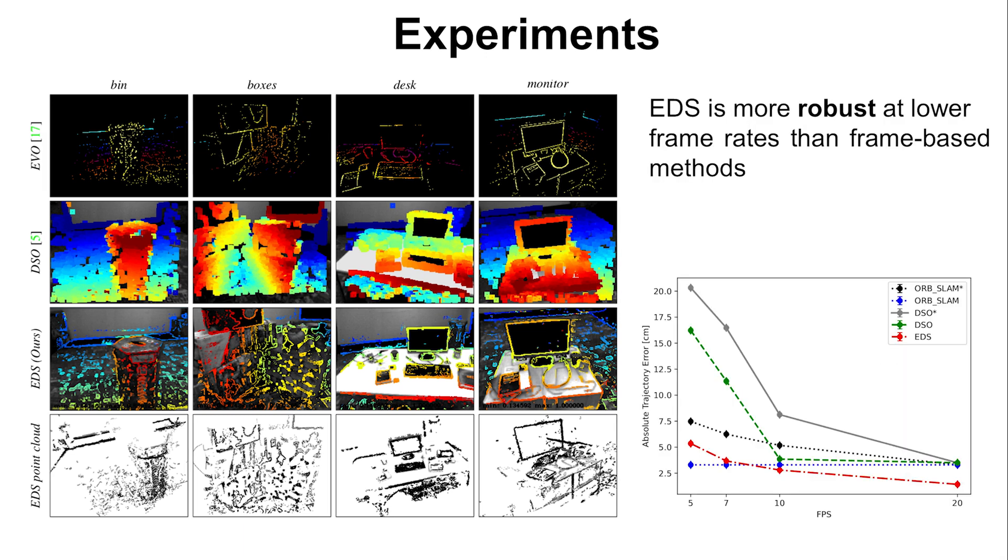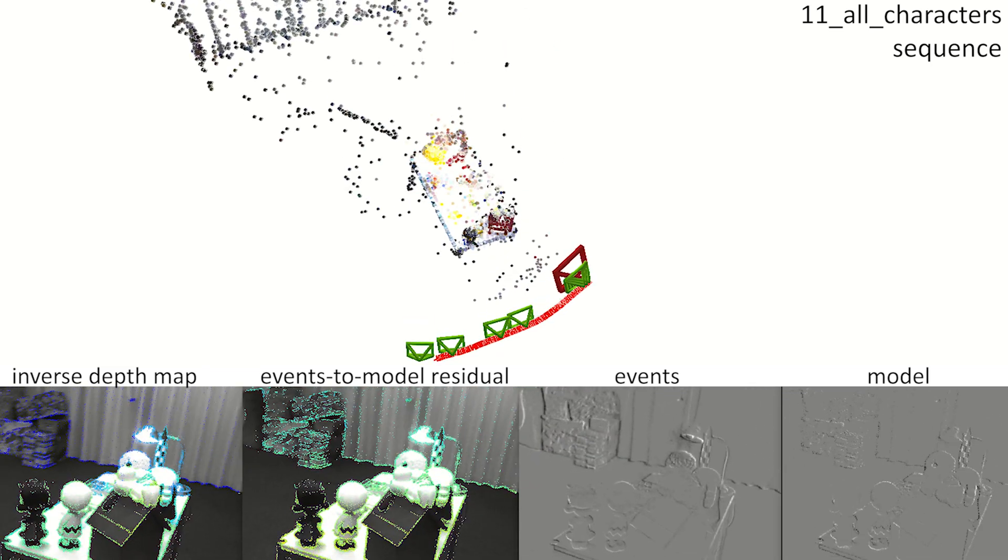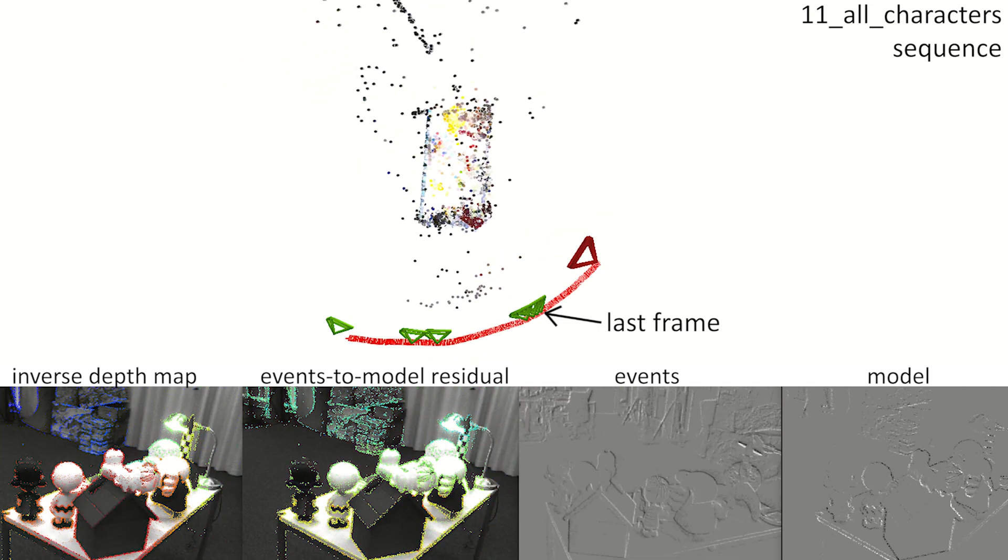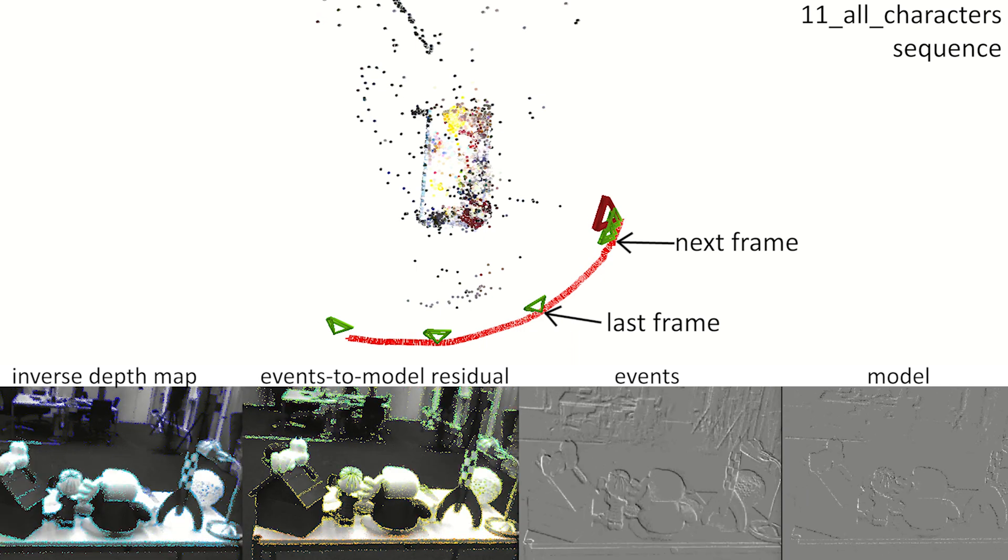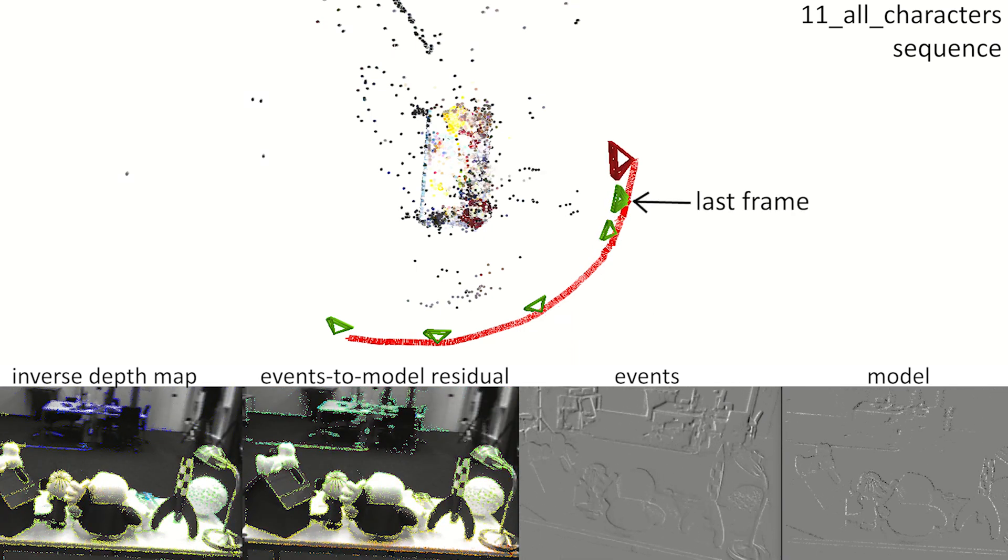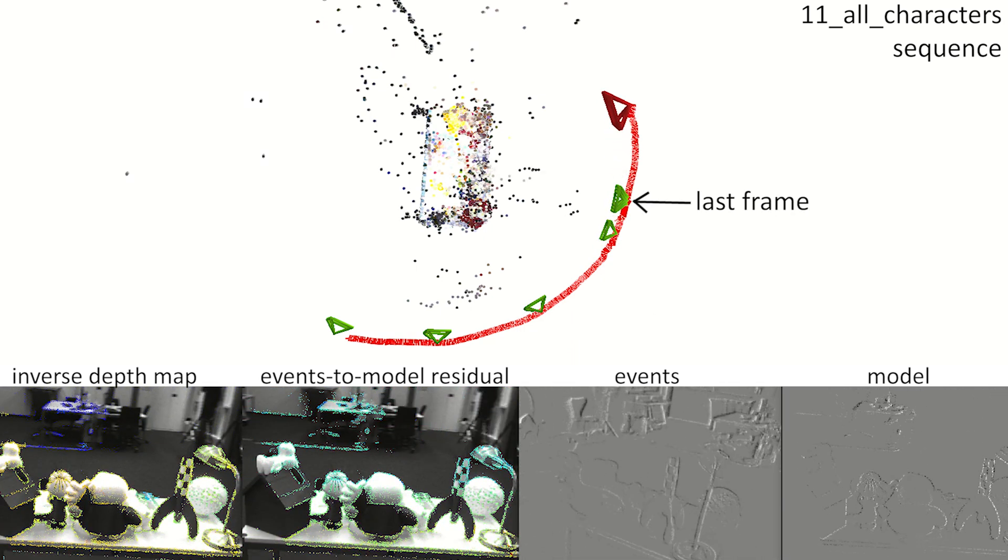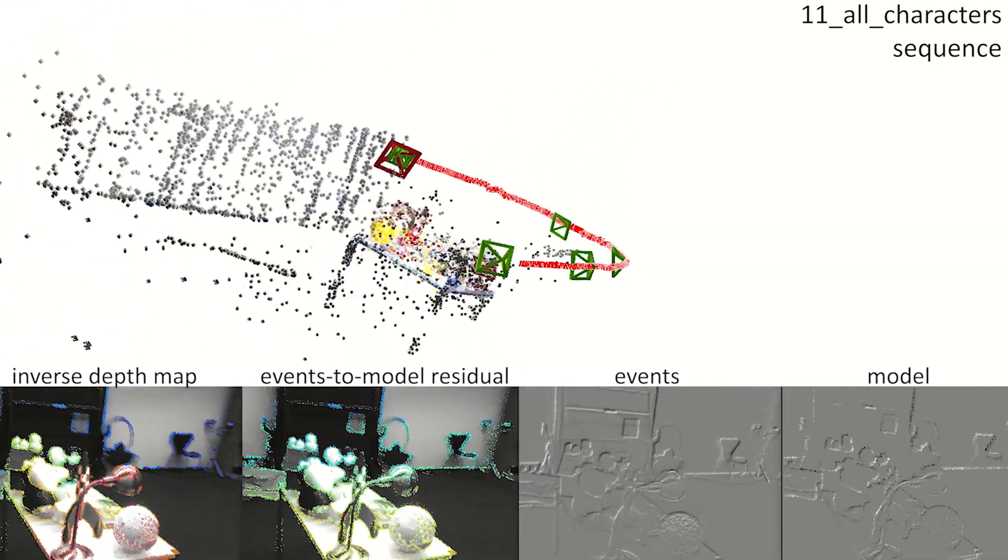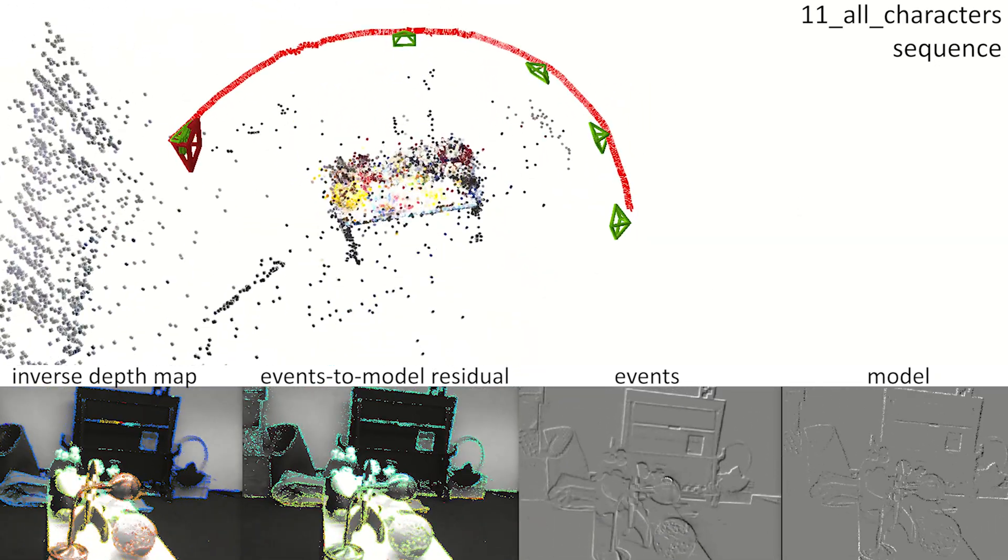EDS is more robust at lower frame rate experiments than frame-based methods. This is because EDS can continuously track the camera motion in the blind time between frames. When a new frame is given, classical photometric optimization triangulates new points without losing camera tracking thanks to the events. It opens the door to sparingly trigger frames on demand and tracks the motion in between.